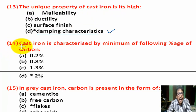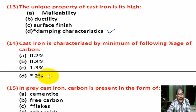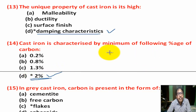Question number 14: Cast iron is characterized by a minimum of the following percentage of carbon — Option A: 0.2%. Option B: 0.8%. Option C: 1.3%. Option D: 2%. Correct answer is Option D — 2%. The minimum percentage of carbon in cast iron is 2%.